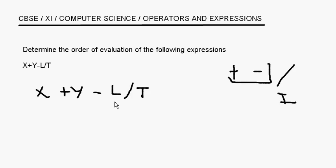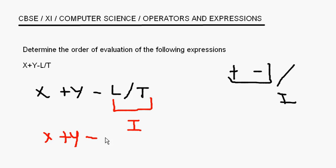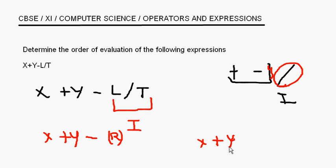In this case, the expression is x plus y minus l divided by t. The part l divided by t is the first one to be evaluated. Whatever is the result — let's call it r — this operator is already done. Now you have plus and minus, which have the same priority, so it will go from left to right. First x plus y, and then that result minus the result of l divided by t.